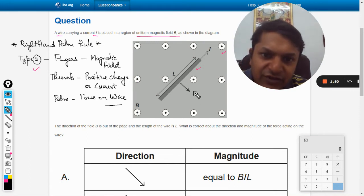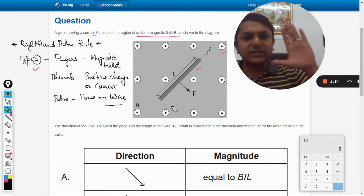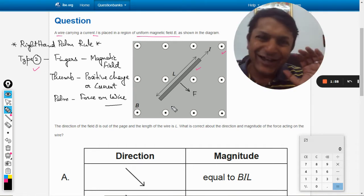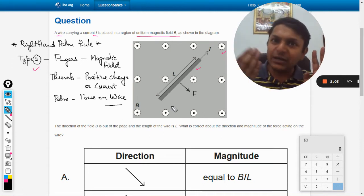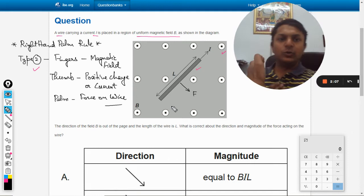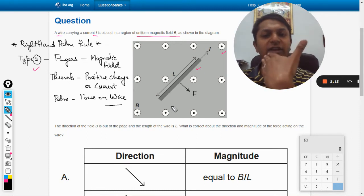I am repeating it again. My fingers are pointing towards the magnetic field which is coming out of the plane towards me, and my thumb is pointing towards the current at 45 degree angle. So my palm is going downwards, so the force will be f.